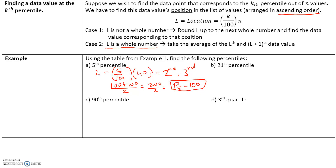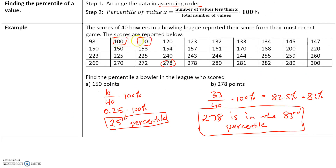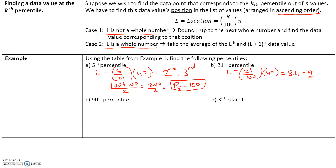In part B, let's find the 21st percentile. The location is L equals 21 divided by 100 times 40, which gives 8.4. Since 8.4 is not a whole number, we round L up to the next whole number, giving L equals 9. That means we find the 9th data value in the ascending data set. The 9th data value is 145. Using proper notation, P sub 21, or the 21st percentile, equals 145.